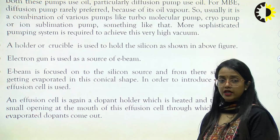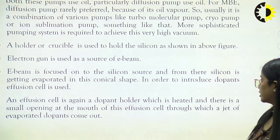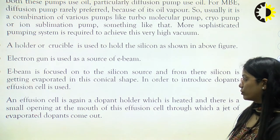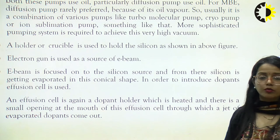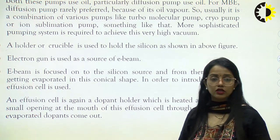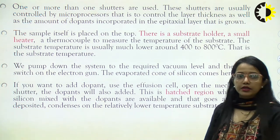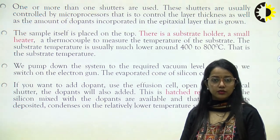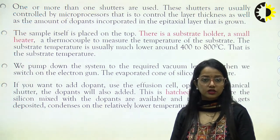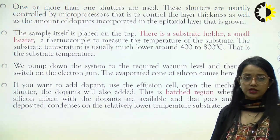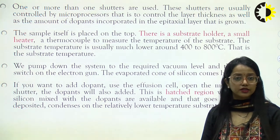The effusion cell is the holder where the dopant is filled up, which is heated. There is a small opening at the mouth of the effusion cells through which a jet of evaporated dopants comes out and gets settled on top of the wafer. The sample is placed at the top with a substrate holder and a small heater. A thermocouple measures the temperature of the substrate, which is much lower than 1400 degrees Celsius — approximately 400 degrees Celsius.